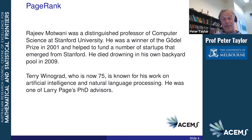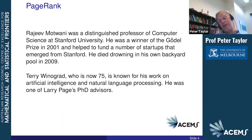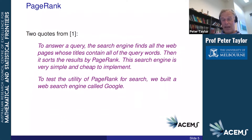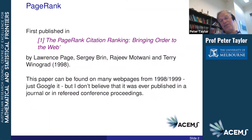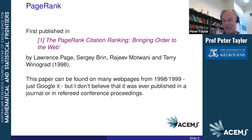Terry Winograd, on the other hand, who is now 75, is still around and known for his work on artificial intelligence and natural language processing. He was one of Larry Page's PhD advisors. I believe the algorithm is called PageRank because Larry Page is one of the authors — I'd always previously thought it was called PageRank because it ranks web pages, but I believe it's actually named after him.